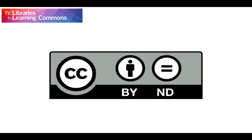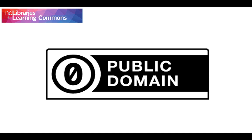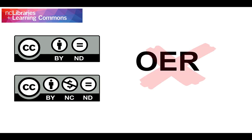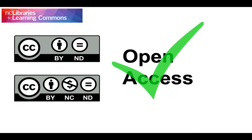The CC BY ND license allows re-users to copy and distribute the material in any medium or format in unadapted form only, and only so long as attribution is given to the creator; this license allows for commercial use. The CC BY NC ND license allows re-users to copy and distribute the material in any medium or format in unadapted form only, for non-commercial purposes only, and only so long as attribution is given to the creator. The CC Zero license is a public dedication tool which allows creators to give up their copyright and put their works into the worldwide public domain; CC Zero allows re-users to distribute, remix, adapt, and build upon the material in any medium or format with no conditions. It is worth noting that items licensed under CC BY ND and CC BY NC ND are not OER because you cannot adapt the original material — they are open access materials, so you are free to use them in their unaltered form for classroom use.